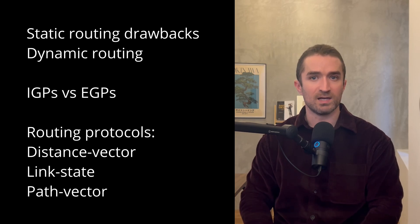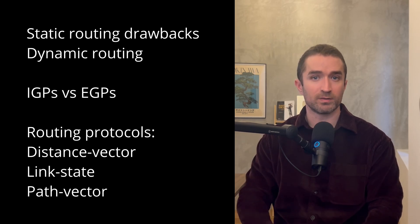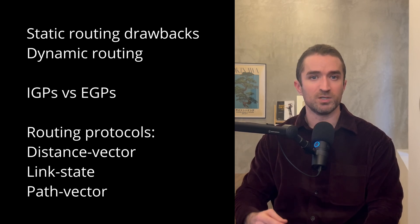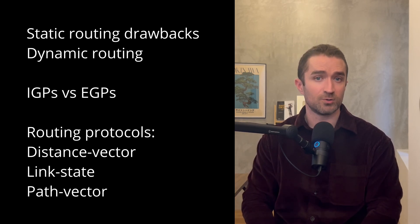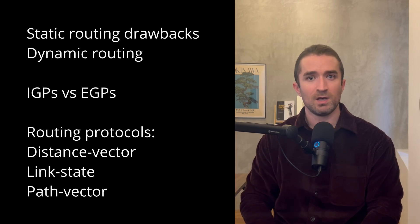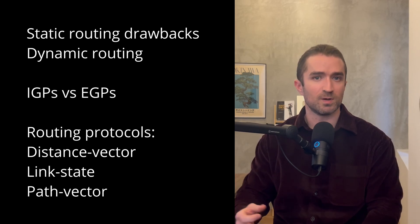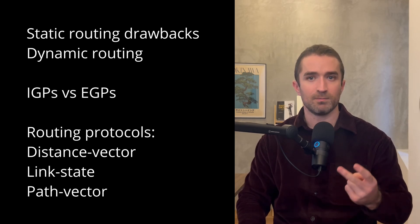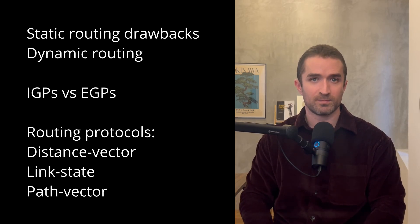Then IGPs and EGPs — interior gateway protocols for routing within an autonomous system, and exterior gateway protocols for routing between autonomous systems. We'll then move on to introduce the five routing protocols used in modern networks, and cover the basics of the different algorithm types: distance vector, link state, and path vector. Let's get started.